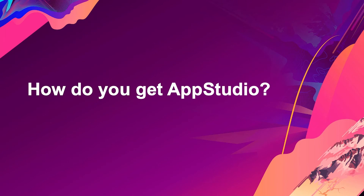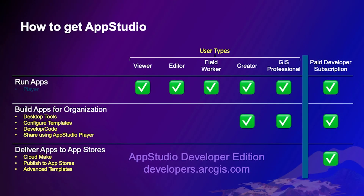Now let's talk about how you get ArcGIS AppStudio. Any ArcGIS user type can run AppStudio apps using AppStudio Player. So you can be a viewer, a field worker, a creator — you can download and run apps with AppStudio Player. Now, to be able to create new apps, you need to be a creator or GIS professional. That way you can build apps for your organization, have access to all the desktop tools, configure templates, and even write new code. The way you'll distribute them is using AppStudio Player.